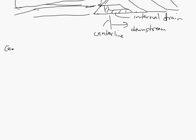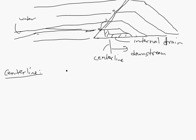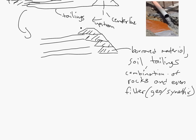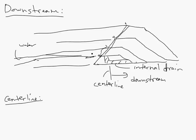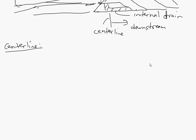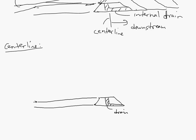Let's look at centerline. Centerline is actually a combination of both methods. You would again start off with a starter dike, and you would also have a drain in here. The spigot is here and again you're discharging. This is tailings, and you'll have water here. Your second lift would actually be a combination - you would actually go up like this and then go down. So you're actually building from the center, and your drain is down there.